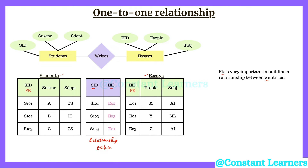This relationship table cannot have two primary keys. There has to be one primary key in this table, so we will assume one attribute as the primary key — either SID or EID. If SID is the primary key, then EID will act as the foreign key. A primary key attribute when used in another table acts as a foreign key. We can also declare EID as the primary key, in which case SID will act as the foreign key.